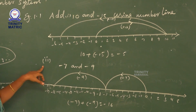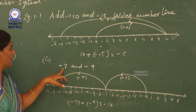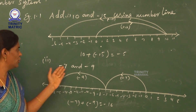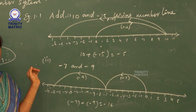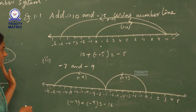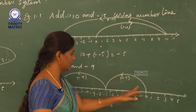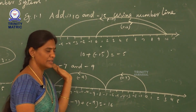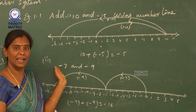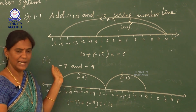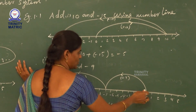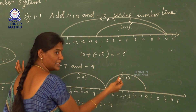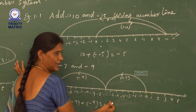Then the next sum, we add minus 7 and minus 9. Both integers are negative, so we move to the left side. First we start at 0. What is the first integer? Minus 7. This minus indicates the left side direction. Minus 7 means we count 7 units to the left side of 0.